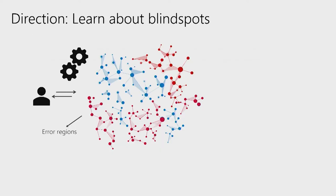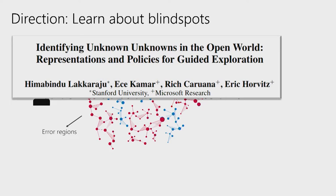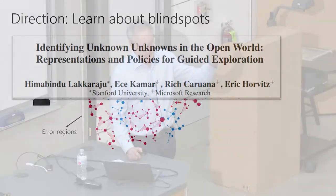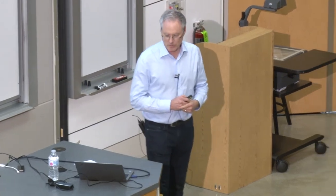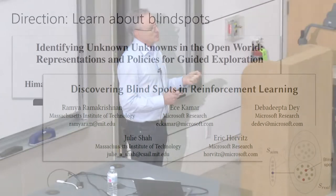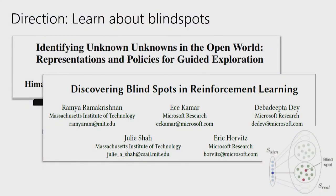Work with intern Himabindu Lakaraju, a Stanford intern with us a couple of years ago, looked at how to automatically work with humans to triage potential blind spots in a machine classifier. More recently we're working on discovering blind spots in reinforcement learning. These technologies are going to be very important to build robust and trustworthy AI systems in the open world.